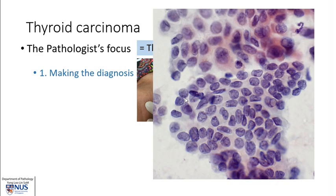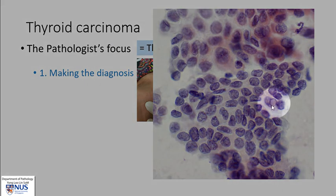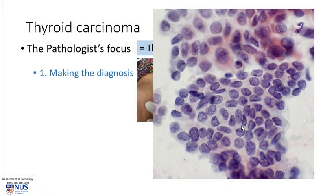Here is an example. When we examine the aspirated material from a thyroid nodule, we can see that the nuclei here are quite oval to irregular. There is very powdery, fine chromatin. There are very well-formed nuclear grooves, and we can also see occasional nuclear pseudo-inclusions. This is a very classical clear-cut case of papillary thyroid carcinoma, and we can make this diagnosis with a high degree of accuracy on cytology.